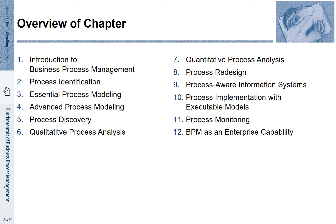The book is subdivided into 12 chapters. Chapter 1 gives an introduction to business process management from a general perspective. Chapter 2 describes process identification, that is a strategic perspective on process organization. Chapters 3 and 4 discuss process modeling and in particular BPMN. Chapter 5 describes how process discovery works. Chapters 6 and 7 focus on different aspects of process analysis, qualitatively and quantitatively.